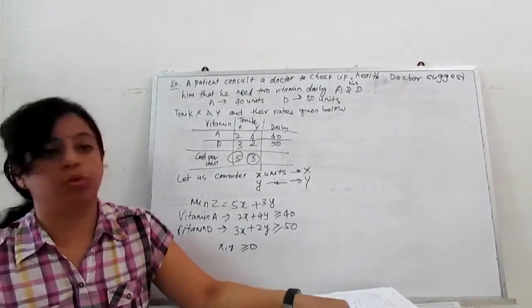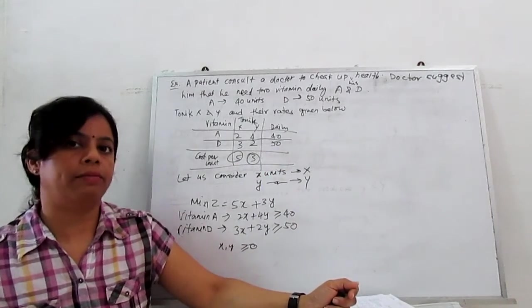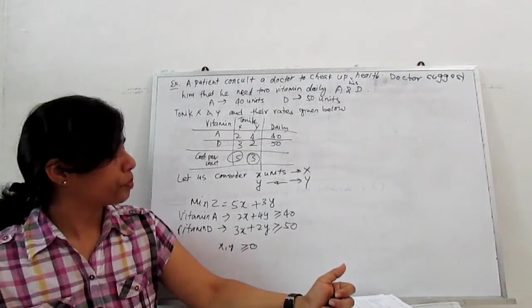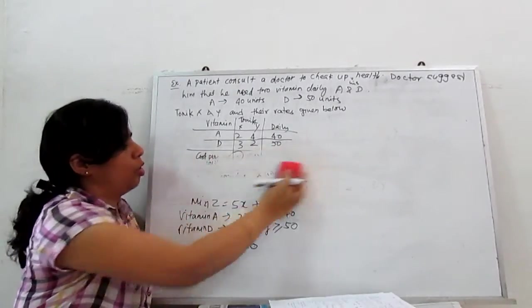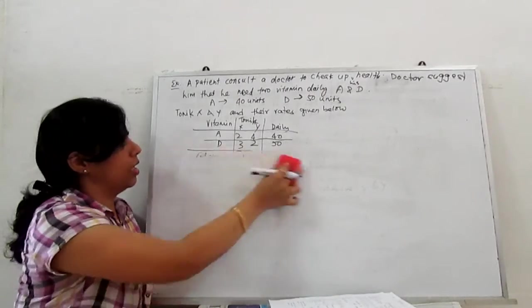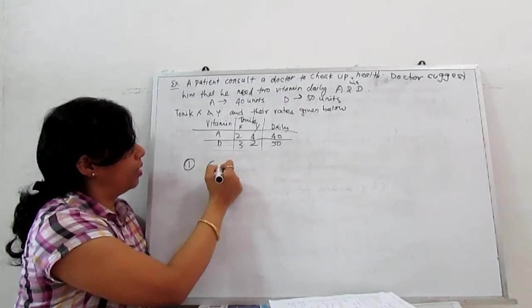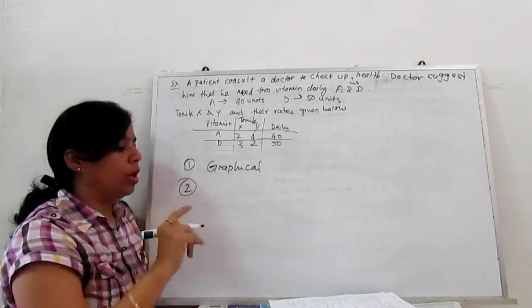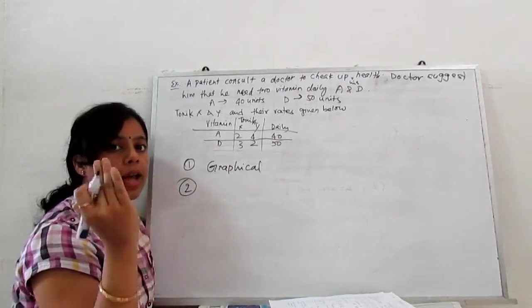Next we move to the methods for solving these problems. There are different methods. The most simple and easiest method is the graphical method. We draw graphs of these straight line constraints. First one is graphical method.